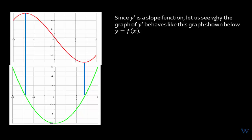Since y prime is a slope function, let us see why the graph of y prime behaves like the graph shown below our function y equals f of x. The red curve is our y function, f, and the curve below it is our f prime. We'll look at the slopes of the lines tangent to the red curve starting from left going to the right.